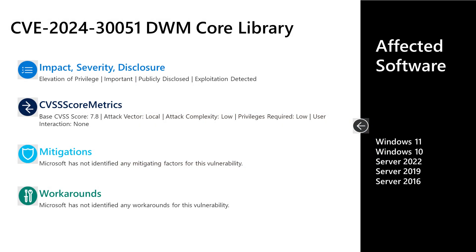Let's dive into some of the vulnerabilities from today's release, starting with an important elevation of privilege vulnerability in the Windows DWM core library. This is CVE-2024-30051. This has a base score of 7.8. This one was publicly disclosed and exploitation has been detected. The attack vector is local, the attack complexity is low, and low privileges are required, but no user interaction is required. There are no documented mitigations or workarounds. A threat actor would need to already have a foothold on a system with some type of valid credentials, and could then gain system-level privileges. The affected software is Windows 10 and 11, Server 2016, 2019, and Server 2022.